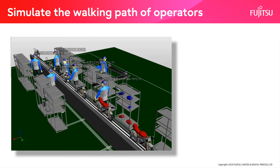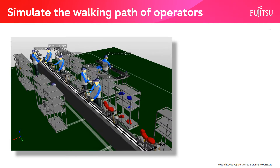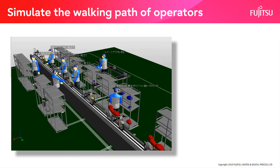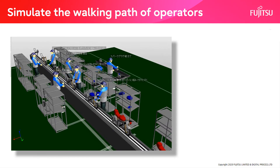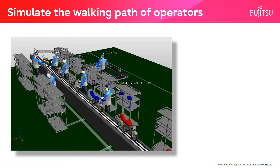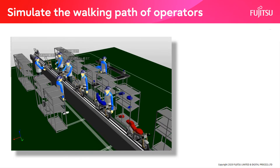Create a production line layout and place the parts to be assembled on the shelves. When the work procedure is set and the worker is placed, the walking route of the worker is automatically created.